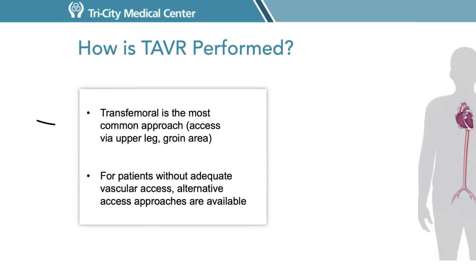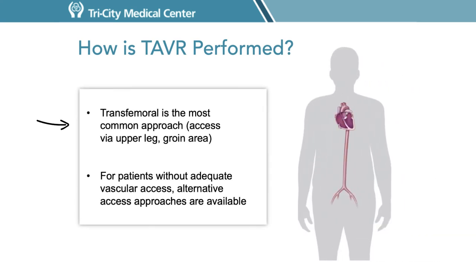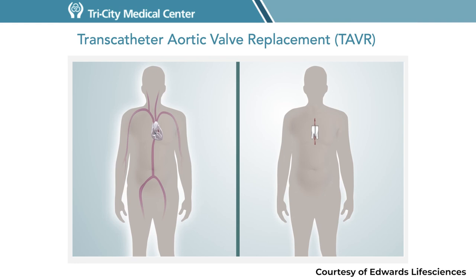How is TAVR performed? Transfemoral transcatheter aortic valve replacement is the most common approach. Access is obtained to the femoral artery in the leg, and a new heart valve is advanced on a delivery system to the aortic valve. Once the new heart valve has been deployed, all the equipment is removed, leaving a new heart valve in place. The old native heart valve is used as the foundation or landing zone for the new valve. Alternative access approaches are available if there is significant artery disease in the legs, but the best approach is decided by the specialized multidisciplinary heart team.